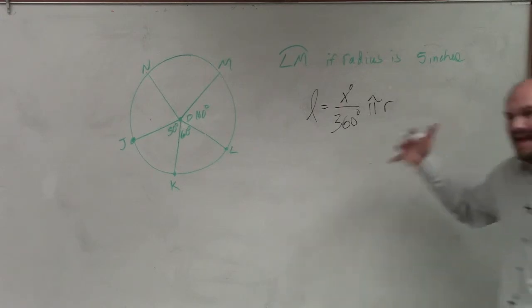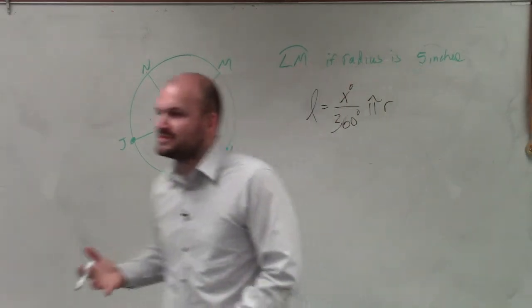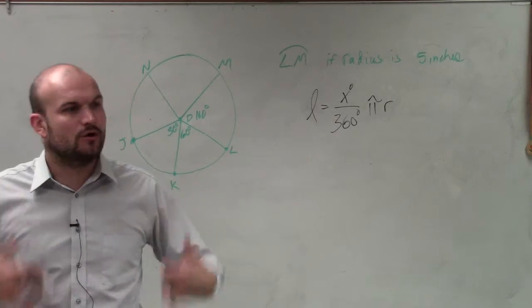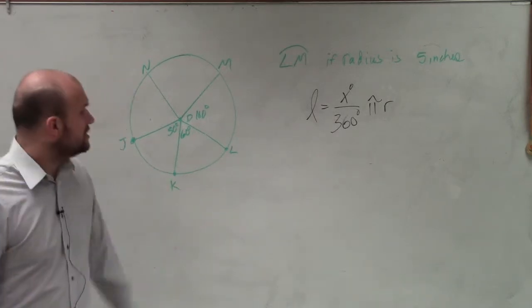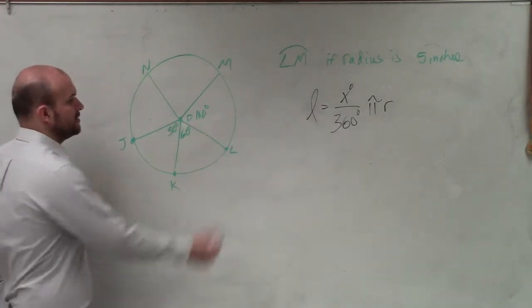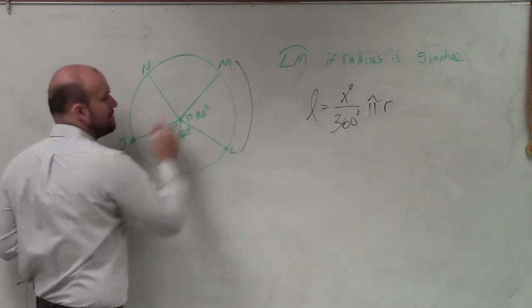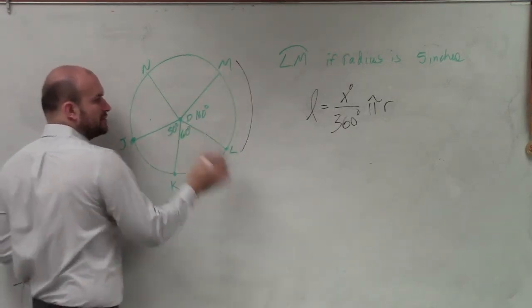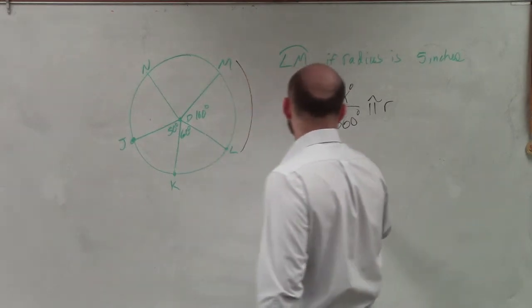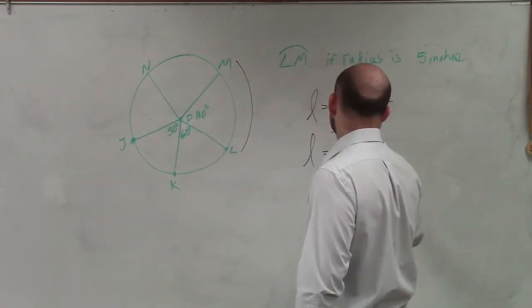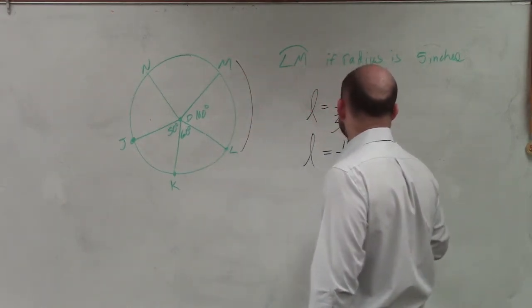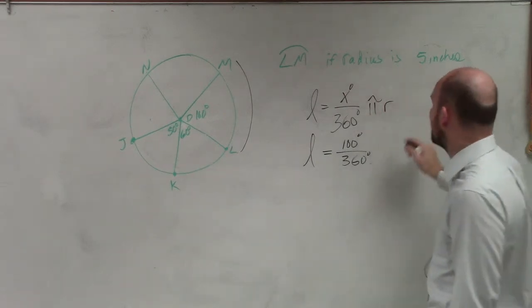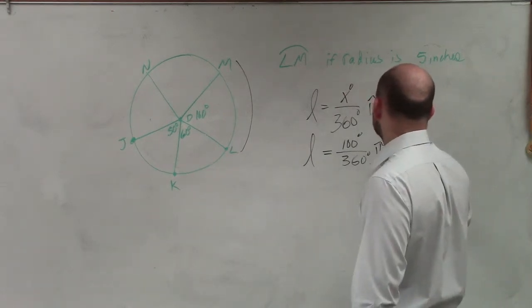Now, what we need to do is when we're talking about the angle, what does x angle represent? That represents the central angle, which I'll talk a little bit more about. So to find the central angle, we need to look at our arc LM, which is a minor arc. And the angle for LM is 100 degrees. So therefore, the length is equal to 100 degrees over 360 degrees. They tell us the radius is 5 inches, so it's pi times 5.